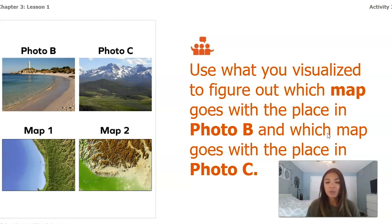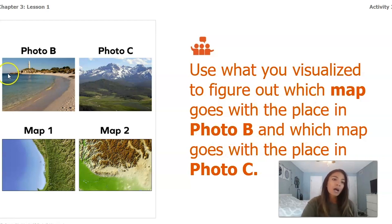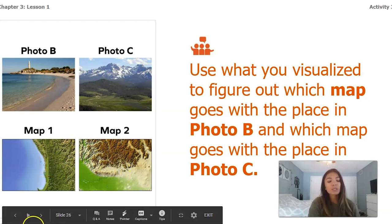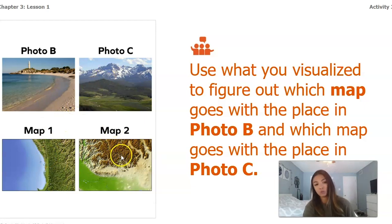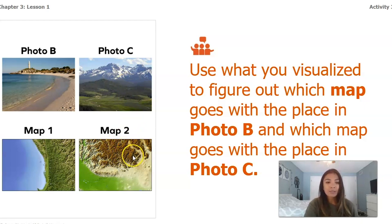Now use what you visualized to figure out which map goes with Photo B and which goes with Photo C. Pause the video and try to match them up. For Photo B, I see water and mostly low land with no hills or mountains, so it matches map one — I can see the water and green low land. For Photo C I'm looking for high land because of those mountains in the background, and map two shows a lot of very high land with brown around it, so Photo C matches map two.